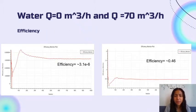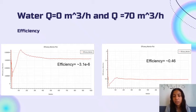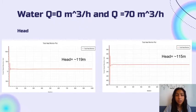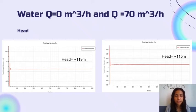Then we have the efficiency. The efficiency for the flow of 0 is very little, as we take from the simulation a value close to 0.001. For the flow of 70, the efficiency is 0.46, which is very good. The torque from both cases is the same. Finally, the head in both cases is also very similar: the head for flow of 0 is 0.119 and the head for the flow of 70 from the simulation is 115.